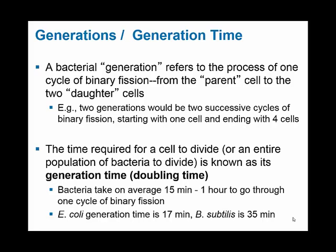The actual amount of time required for an individual cell to divide — or for a whole population of bacteria in a petri dish or test tube to go through one single cycle of binary fission — we call that its generation time, or its doubling time. This is different for every species. E. coli has a generation time of 17 minutes; Bacillus subtilis is 35 minutes. Some mycobacteria can take hours, maybe even a day, to go through one doubling cycle, making them fairly slow growers. E. coli would be fairly fast in the microbial world.